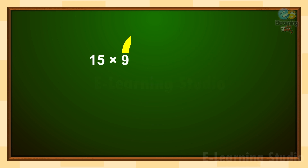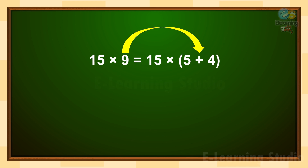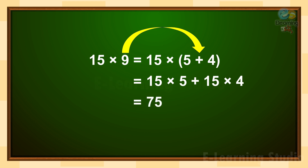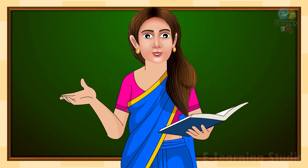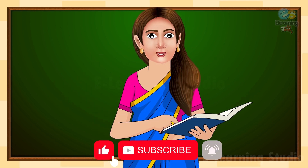In the same way, 15 multiply 9, or we can write it as 15 multiply bracket open 5 plus 4 bracket close. So now, 15 multiply 5, plus 15 multiply 4, equals 75 plus 60, is equal to 135. Children, hope this is clear to all. Thank you and happy learning!